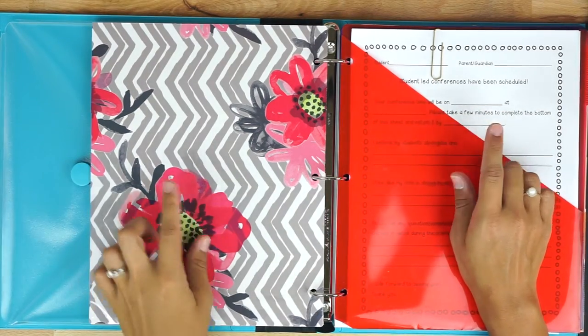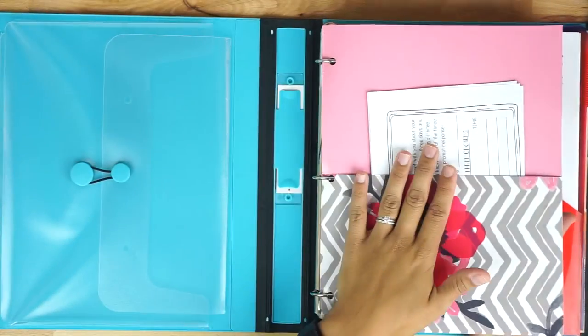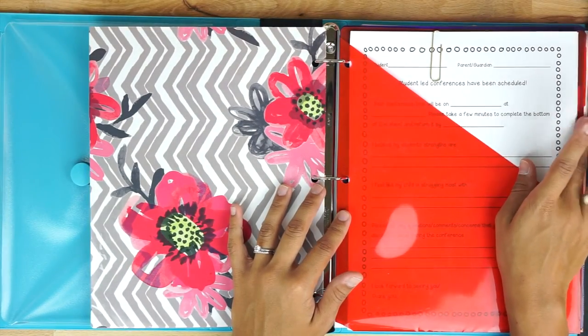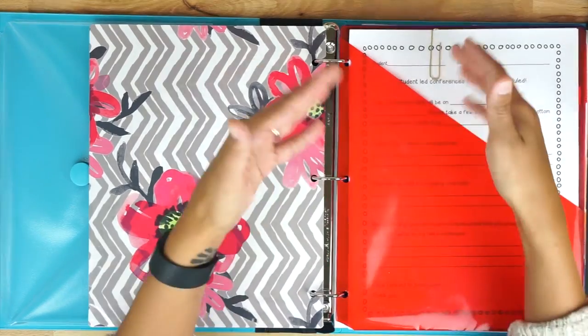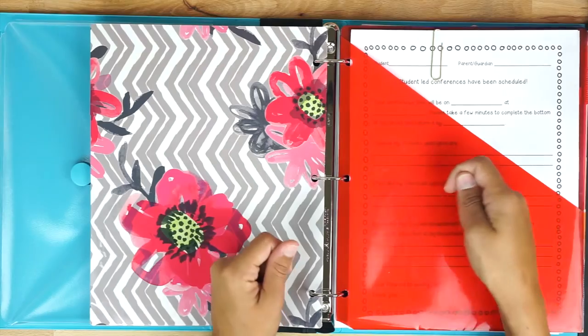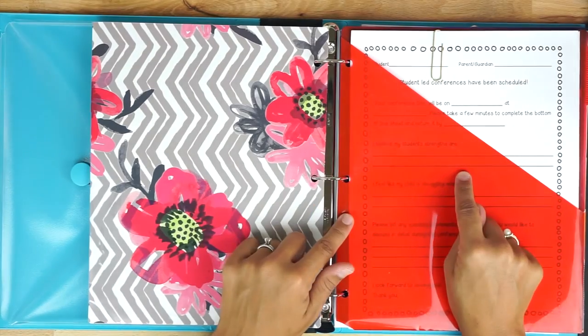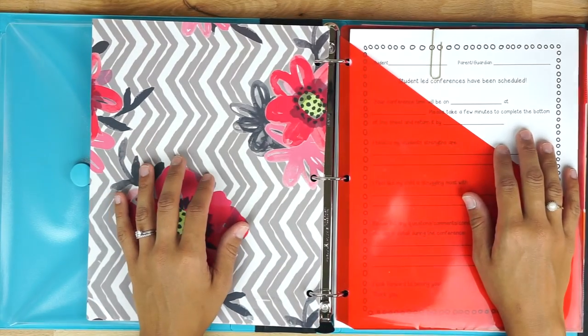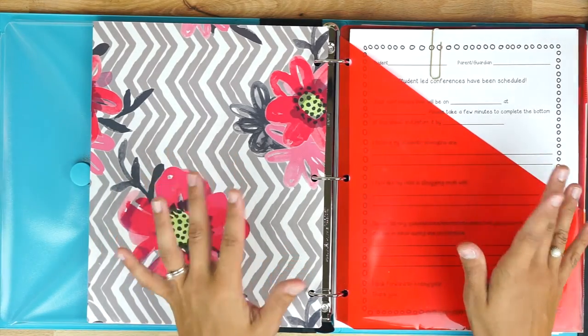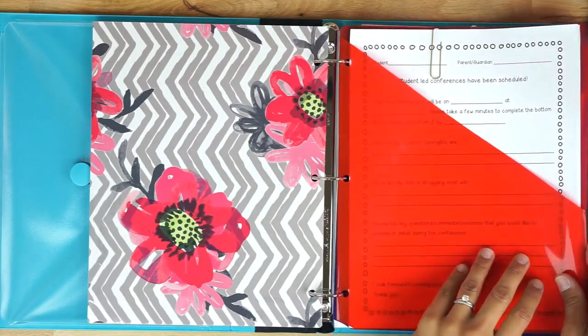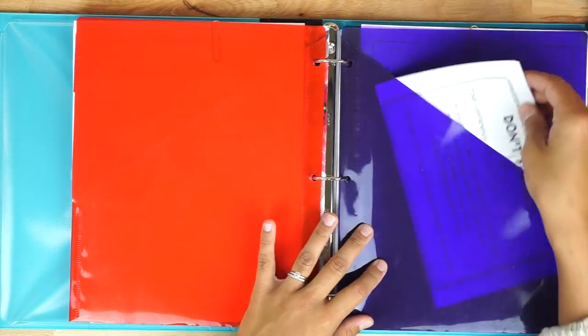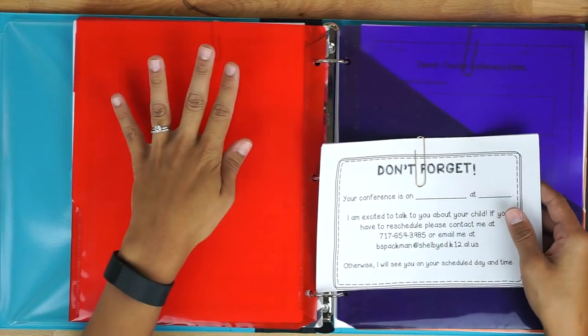As students are bringing back this one and the conference request sheet I'm gonna be putting that in a section in the back that you're gonna see in a minute so those don't get stuck in here. These are just my forms that I can easily and quickly pass out. So at the beginning of the year I copy like 50 or 60 of these and I already have them ready to go so that I'm never having to run to the copy machine to get these copied.